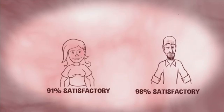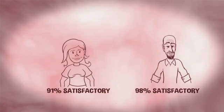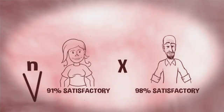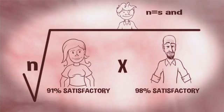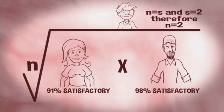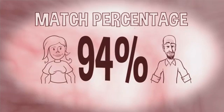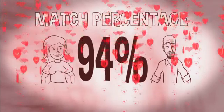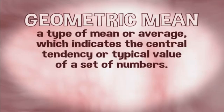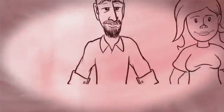The final step is to take these two match percentages and get one number for both of you. To do this, the algorithm multiplies your scores, then takes the nth root, where n is the number of questions. Because S, the number of questions, is only 2 in this sample, we have: match percentage equals the square root of 98% times 91%, which equals 94%. That 94% is your match percentage with B — a mathematical expression of how happy you'd be with each other based on what we know. Now, why does the algorithm multiply rather than average the two scores? In general, this formula is called the geometric mean, which is a great way to combine values that have wide ranges and represent very different properties — in other words, it's perfect for romantic matching.